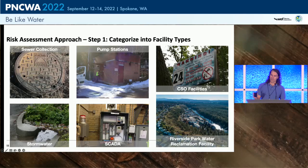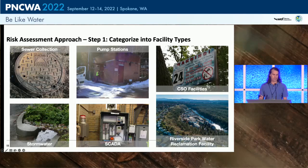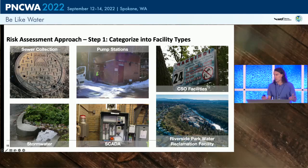There were five steps to this project. The first was to categorize the Spokane facilities into different categories. We split it into six: sewer collection, pump stations, CSO facilities, the Riverside Park Water Reclamation Facility (the treatment plant), SCADA, and stormwater. SCADA cuts across a number of different facilities — the decision to treat it separately was that the folks within the city who operate and maintain the SCADA system do so regardless of what facility it's in.